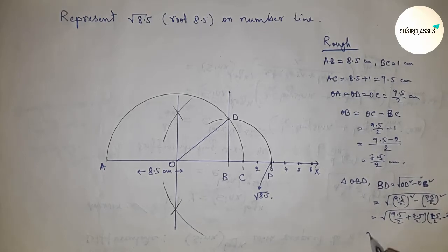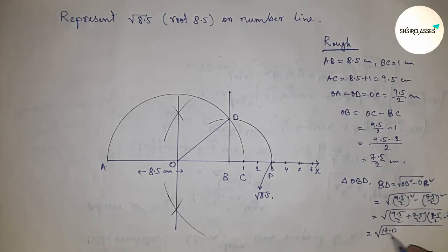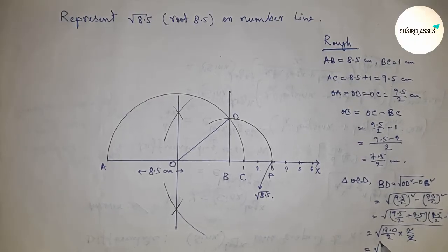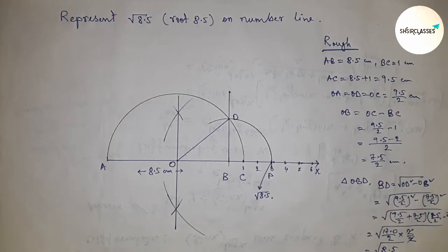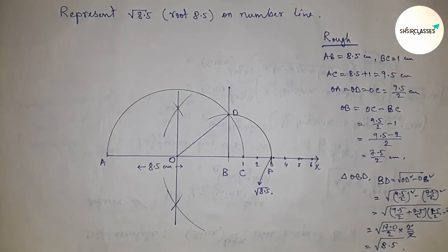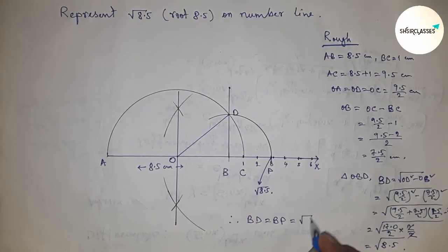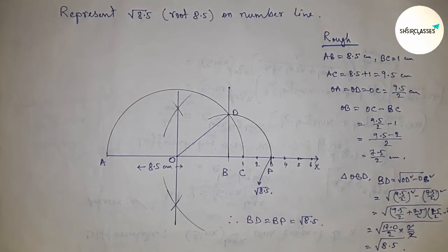Calculating this, from this we get 17, so this is √8.5. Therefore BD equals BP equals √8.5.